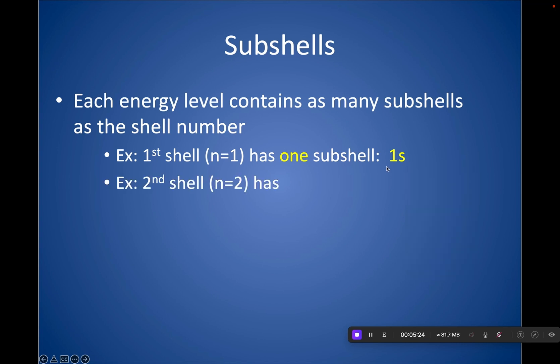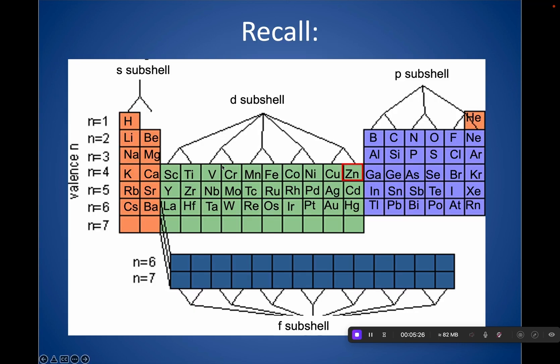The second shell, if we go back here, the things we hit in the second shell is 2S and 2P, so it only has two. If we're going to the third shell, 3S, 3P, and then don't forget, even though we fill 4S first, there is still 3D. So the third shell holds SP and D. It holds three subshells.